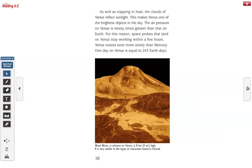As well as trapping in heat, the clouds of Venus reflect sunlight. This makes Venus one of the brightest objects in the sky. The air pressure on Venus is 90 times greater than that on Earth. For this reason, space probes that land on Venus stop working within a few hours. Venus rotates even more slowly than Mercury. One day on Venus is equal to 243 Earth days.